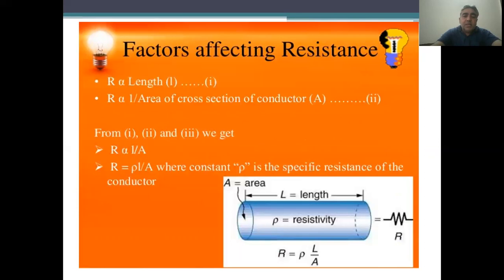Factors affecting resistance: resistance is directly proportional to length, and inversely proportional to the area of cross-section of the conductor. From these two relations, R is directly proportional to L over A. To remove the sign of proportionality, R is equal to rho times L over A, where rho is the specific resistance of the conductor, also called resistivity.